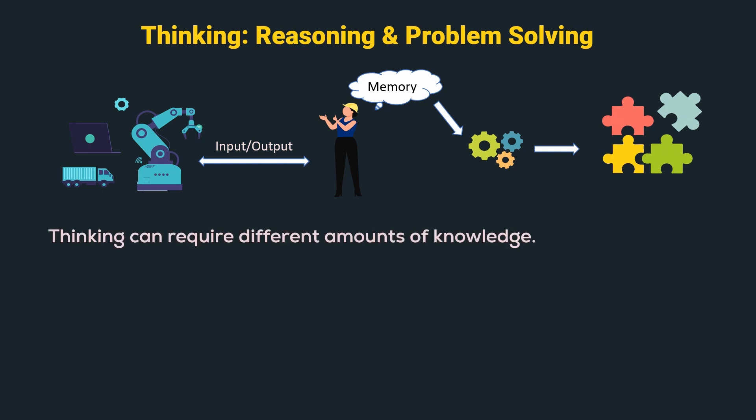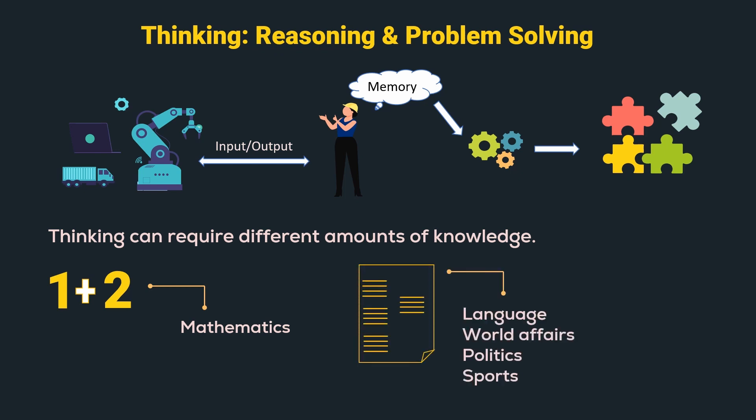Thinking requires different amounts of knowledge. Like adding two numbers requires relatively less amount of information from mathematics domain, whereas understanding newspaper articles require information from different domains like language, world affairs, politics, sports, etc. In this video, we are going to learn two types of thinking: reasoning and problem solving.